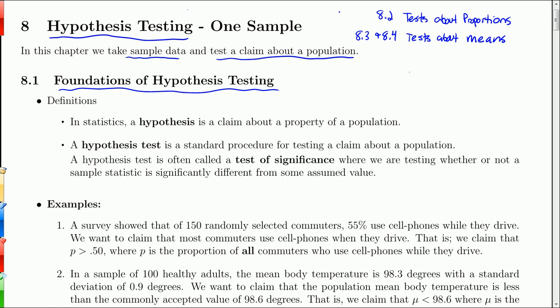And in 8.2, we do hypothesis tests about a population proportion, and in Chapters 8.3 and 8.4, we conduct tests about population means, again, based on sample data.